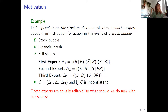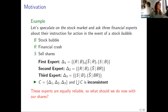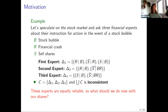Let's say you want to speculate on the stock market, and there are three financial experts, and you ask them for their instruction for action in the event of a stock bubble. All of these experts give different instructions in the form of conditional rules. The first one states that stock bubbles lead to crashes, and if there is a bubble, you should hold your shares, but for a crash in general, you should sell your shares. The second one agrees that bubbles lead to crashes, but says that crashes induced by bubbles should be responded to by holding your shares. The third one shares some opinion with the others but has a different opinion in that case.